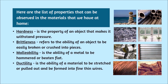Here are the list of properties that can be observed in materials at home. Hardness is the property of an object that makes it withstand pressure — example: stone and steel. Brittleness refers to the ability of an object to be easily broken or crushed into pieces — example: glass and window. Malleability is the ability of a metal to be hammered or beaten flat — example: tin can and roof. Ductility is the ability of a material to be stretched or pulled out and formed into fine tin wires — example: copper wires and gold.